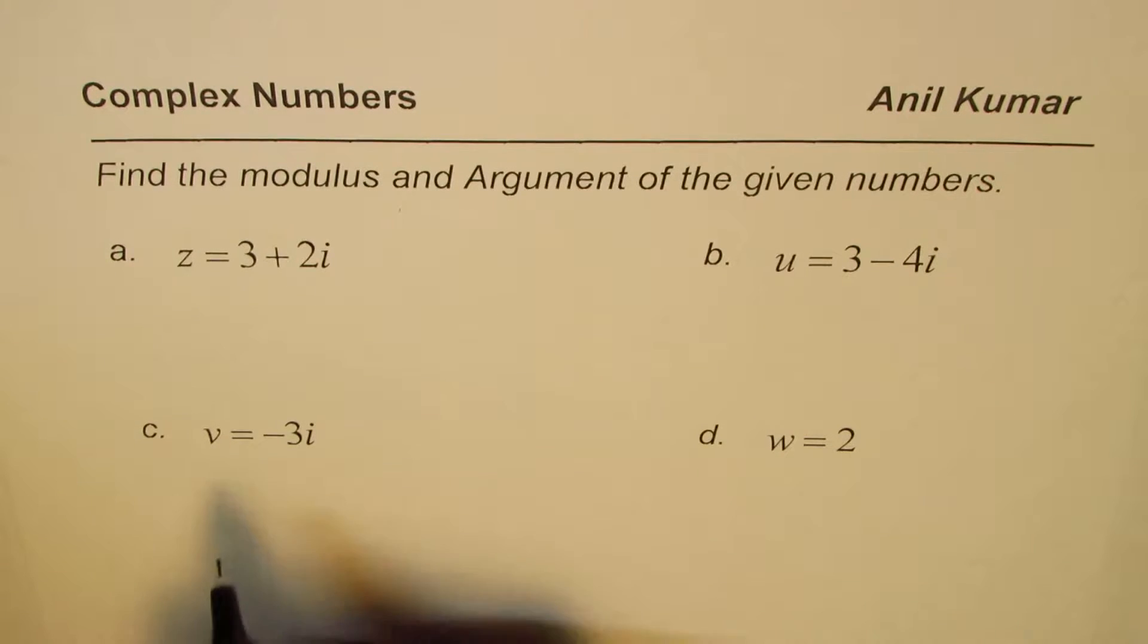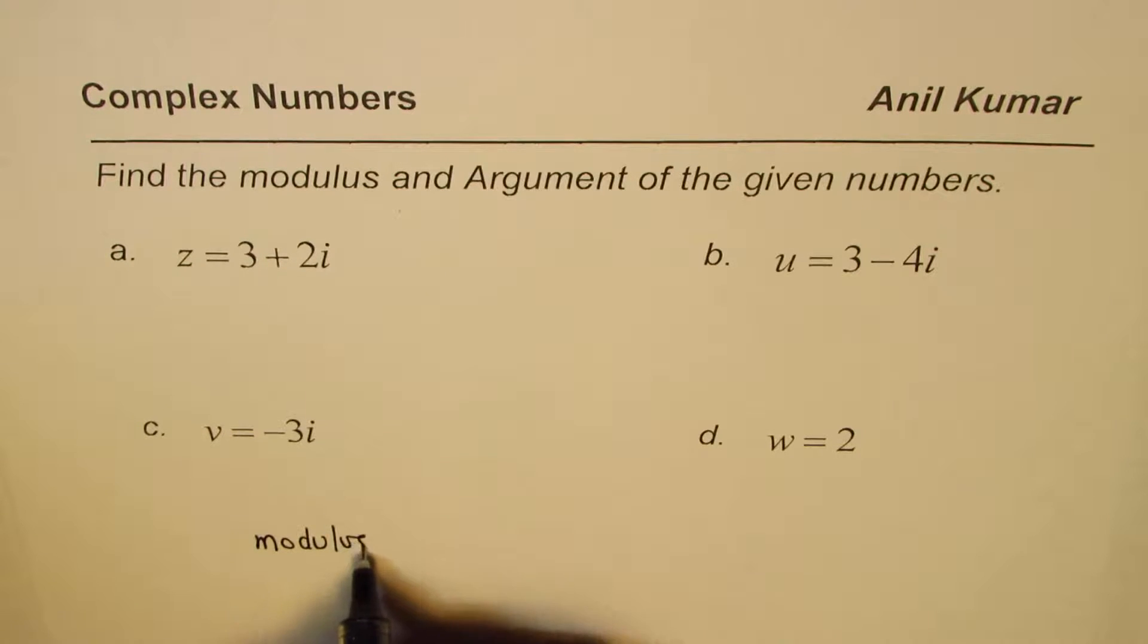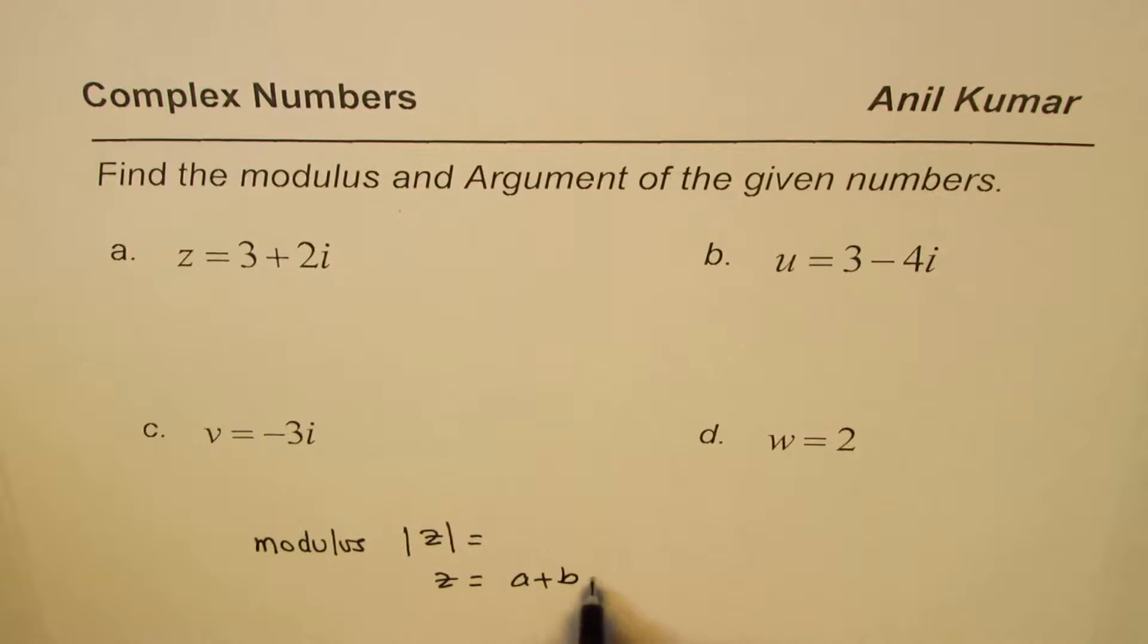I hope you remember what is modulus. Let me write down the formula for you. So the modulus is written as, for any, we'll do for the first one, Z in general. If the number Z is a plus bi, in that case modulus will be square root of a square plus b square.